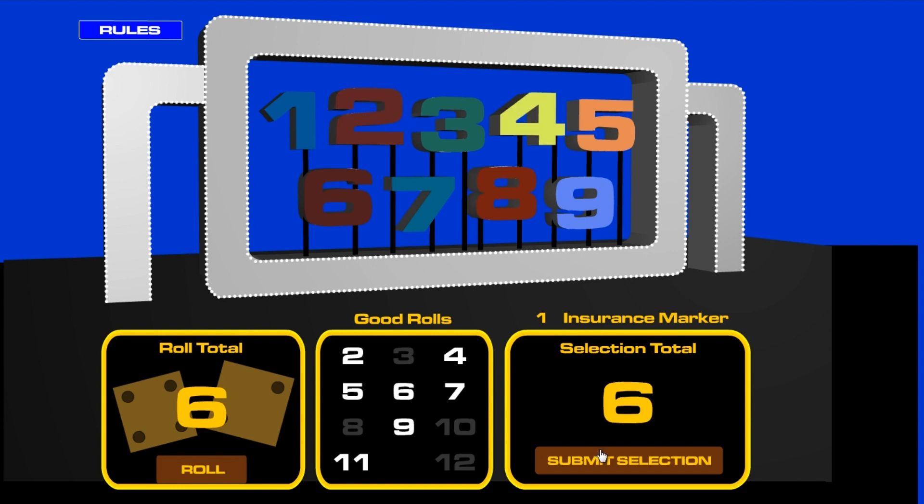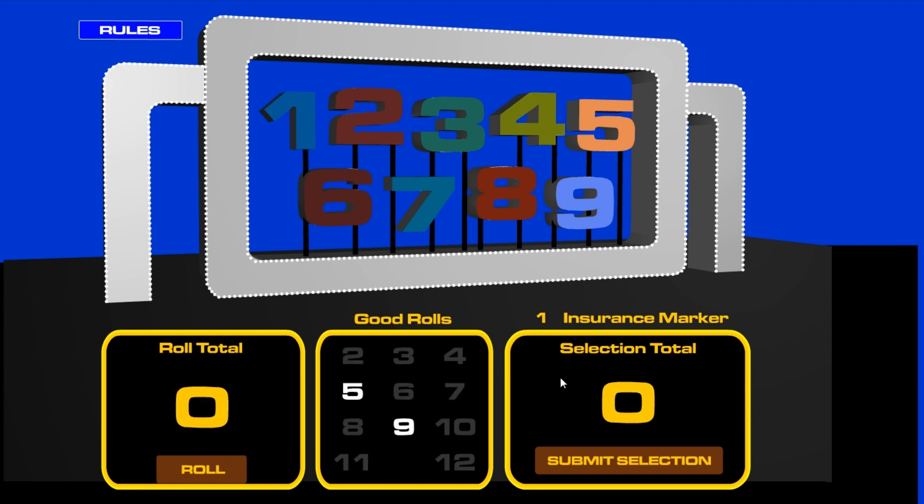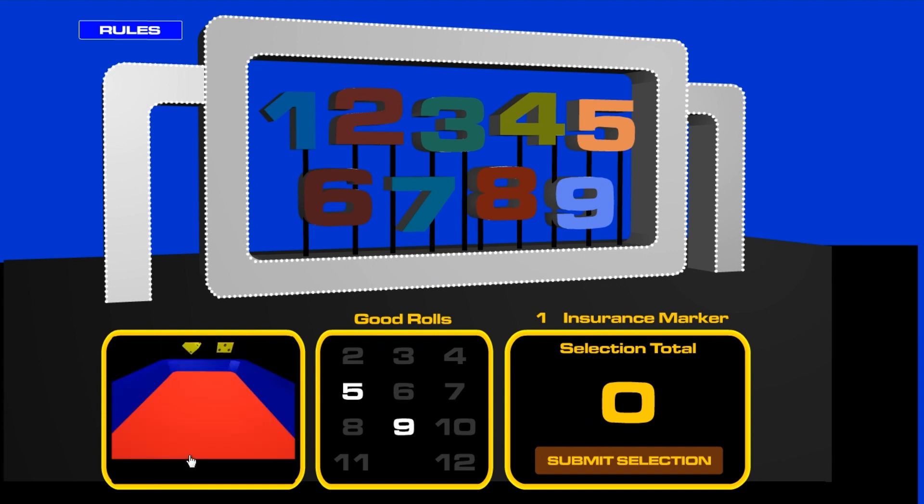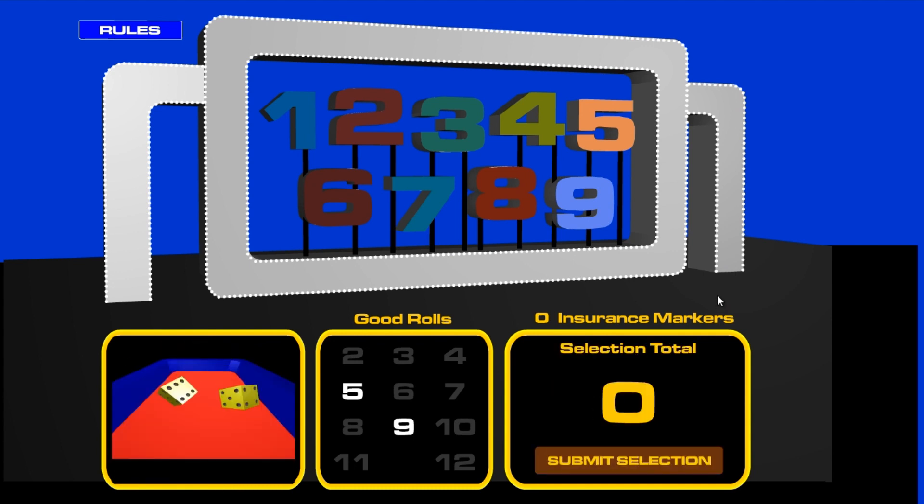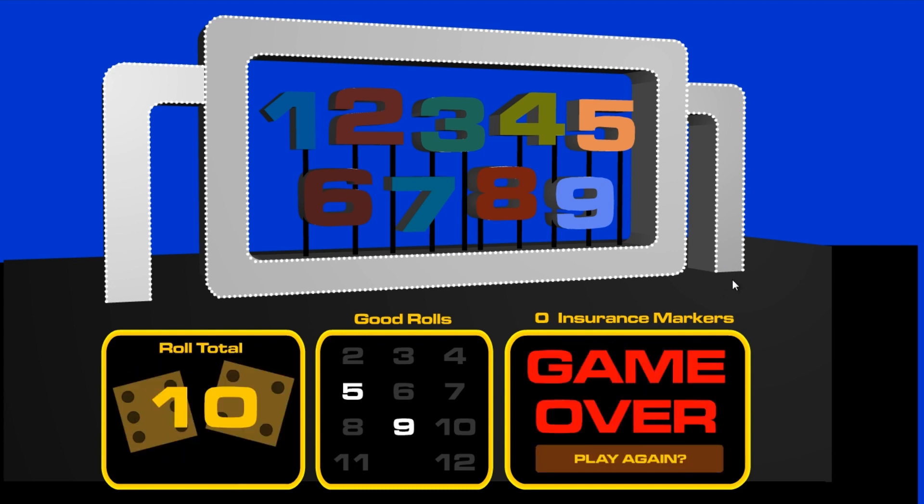There's the seven, there goes that insurance marker. Last roll, and it's a six. We get another chance at it, and it's over. It's over with the 10.